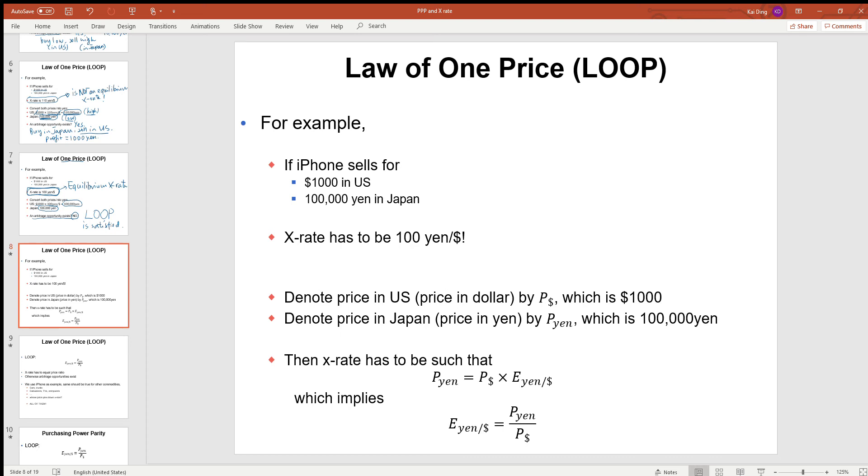More generally speaking, if we denote the price of iPhone in the US, or price in dollar units, by PUS, which in our case is equal to a thousand US dollars.